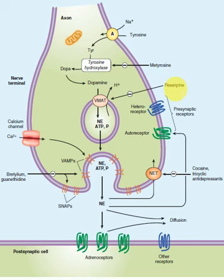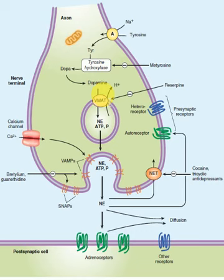Another adrenergic drug is reserpine, which inhibits the storage of dopamine. It means the transport of dopamine into the vesicles is inhibited. Reserpine works by binding to and blocking the VMAT transporter, the vesicular monoamine transporter.